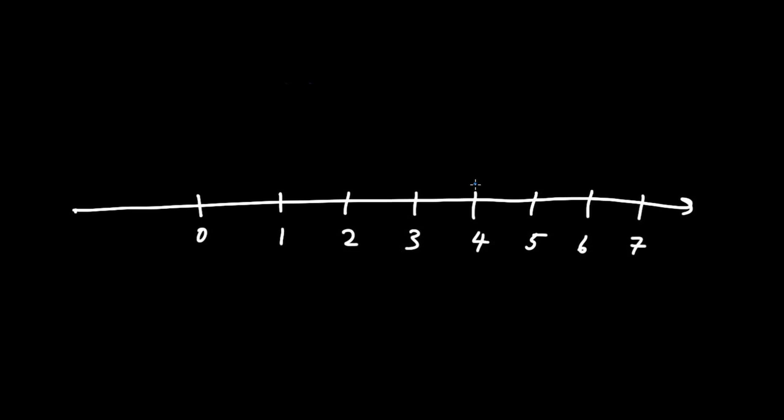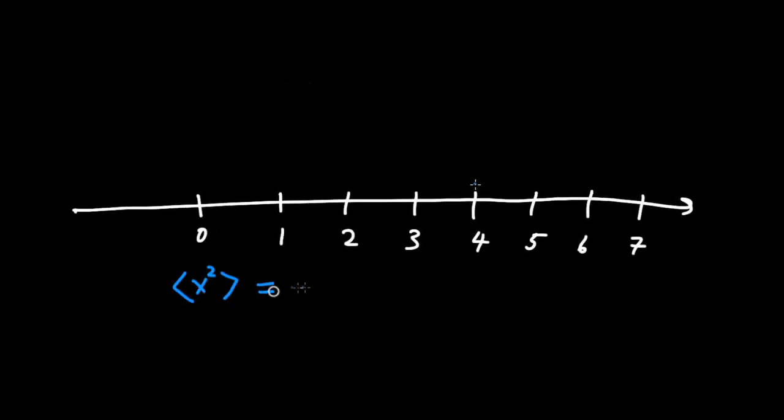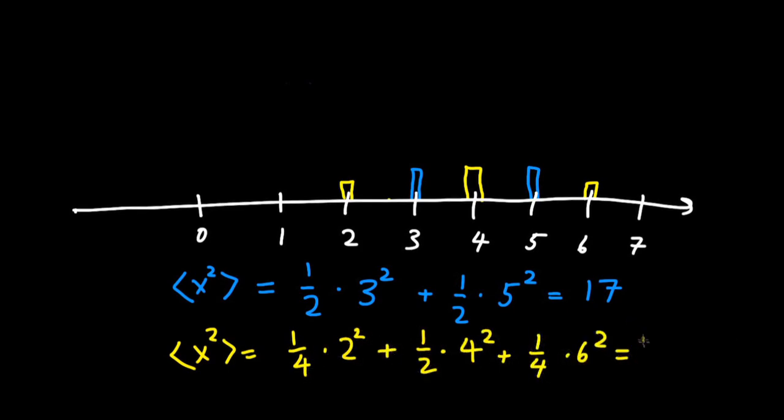What about after one clock tick? Pause the video here and work out the expected value of x squared after one tick. You should have found that the expected value of x squared is now 17. The molecule is equally likely to be here or here. What happens after one more tick? After one more tick, the molecule has a one-fourth chance of being at 2, a one-half chance of being at 4, and a one-fourth chance of being at 6. We find that the expected value of x squared equals 18.